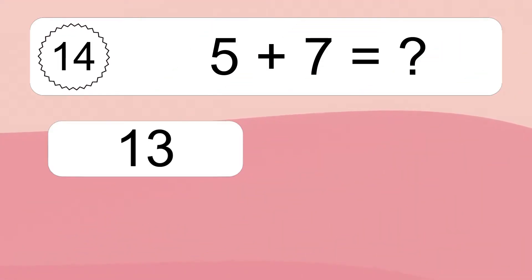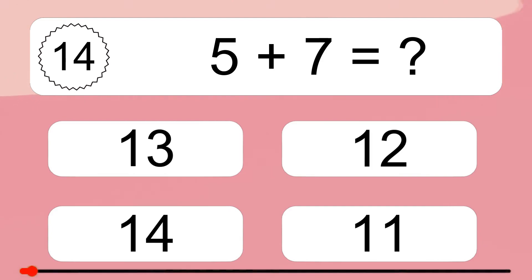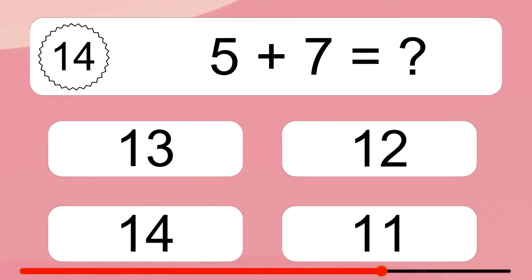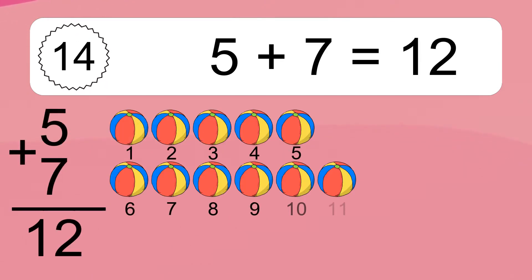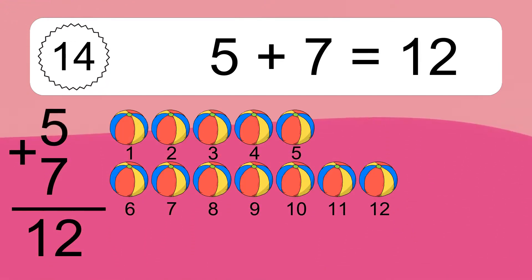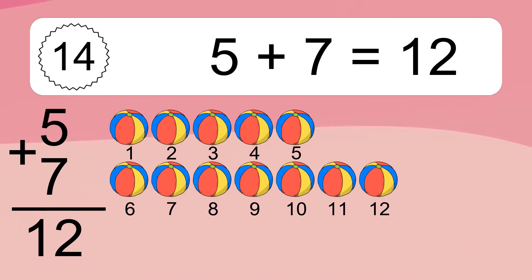5 plus 7 equals what? 5 plus 7 equals 12. Let's count it: 1, 2, 3, 4, 5, 6, 7, 8, 9, 10, 11, 12.